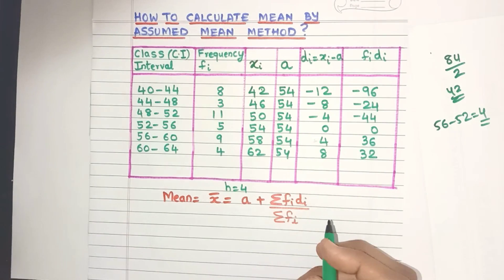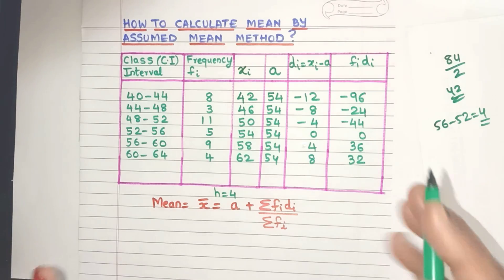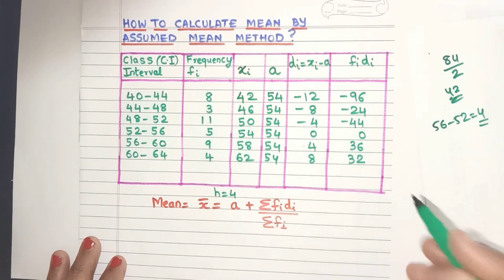Now again, let's come to the formula. It says sigma. Now what is sigma? Yes, it's the Greek symbol for summation which means I need to add up all these values.